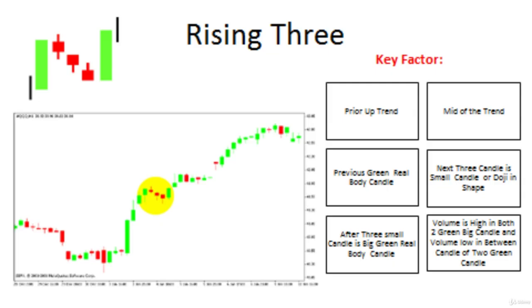As shown in the example chart on your screen, in the middle of the trend you see a spotted area where a big green real body candle appears. After that, three red candles, small in size and shape and with low volumes, give rest or energy to the bulls so they can again control the market. From the next candle onwards, a big green candle takes control.